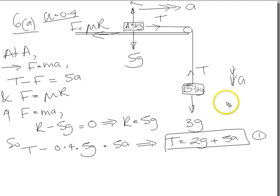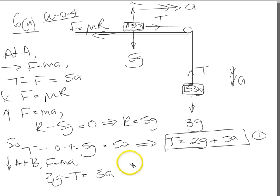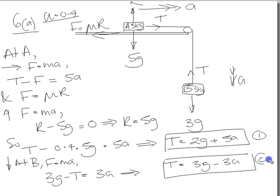Now let's have a look down here. We can apply f equals ma in the downwards direction. 3g minus t equals mass times acceleration. So that tells us then that t equals 3g minus 3a. So I've moved the t across that side, and then moved the 3 over that side and read from right to left. That's number 2.